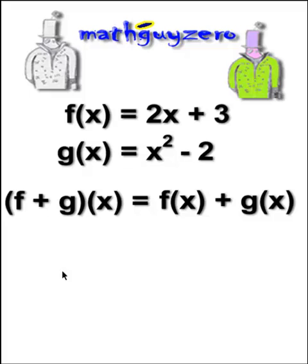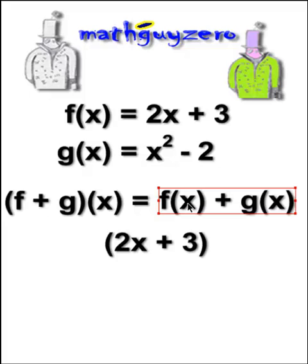First, they want you to add two functions. So (f + g)(x) just equals f(x) + g(x). It's a lot easier than it looks, because we know what f(x) is. It's 2x + 3, and we know what g(x) is.